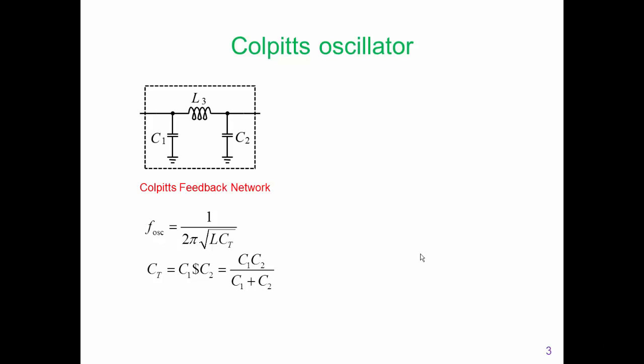When this Colpitts feedback network is used in a feedback amplifier, the frequency of oscillation can be derived by noting that C1 and C2 charge up, and then discharge through L3 to complete an RF cycle. So the frequency of oscillation is given by 1 over 2π times the square root of L times the total capacitance, where the total capacitance is C1 in series with C2, calculated as the inverse of 1/C1 plus 1/C2.